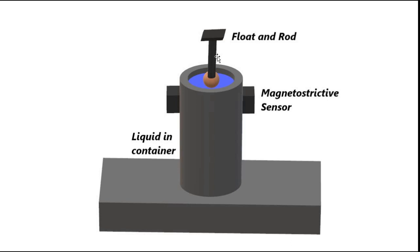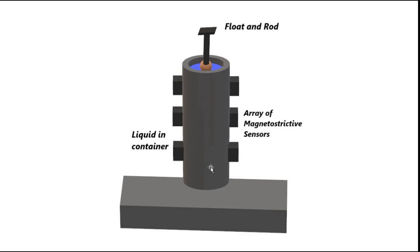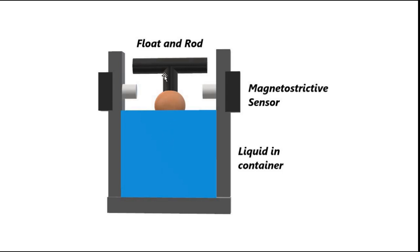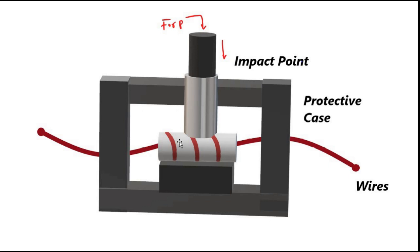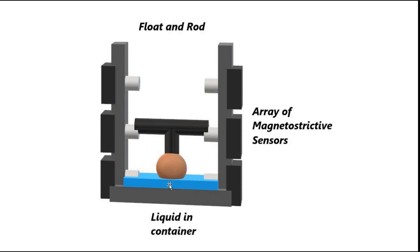In industrial systems, whenever the level goes beyond a danger level we want to send an alert signal, or when it falls below a certain level we need an alert — for those purposes a single sensor suffices. When we need continuous tracking — knowing the level at every time instant — we connect a series of magnetostrictive sensors. As the liquid level goes up and down, the float goes up and down, and the rod strikes the impact points of successive sensors, triggering them.